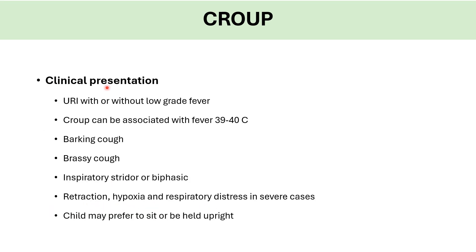Clinical presentation of croup: URI symptoms such as congestion and runny nose, with or without low-grade fever — can be associated with high fever especially with influenza A and B, and COVID-19. The classic presentation is barking cough — once you hear it, you make your diagnosis. Also described as brassy cough. Inspiratory stridor occurs in more significant cases.